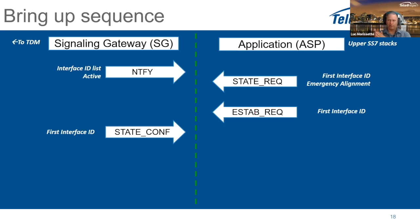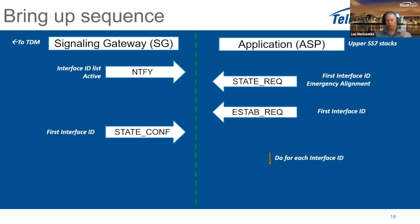If you have only one M2UA link in that connection, it is ready to use once established and messages will flow from MTP2 to M2UA. If you have additional links, the second and subsequent links use normal alignment rather than emergency alignment, verifying communication quality before making the link available to the system.